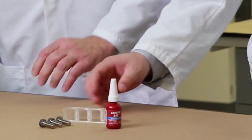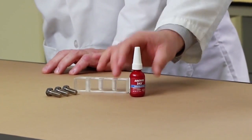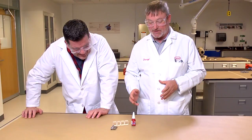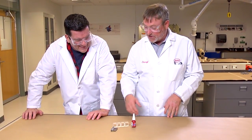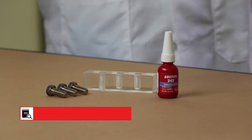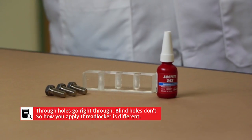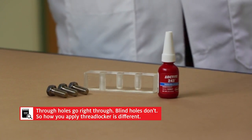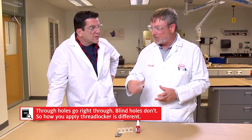Our blind hole demo uses this acrylic block to simulate the two different types of applications. Most applications would be a nut where it's a through hole and there's no bottom to the hole, so there's no air blockage, and you can get good flow of the threadlocker through those threads.